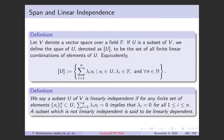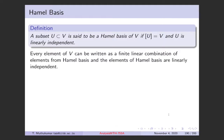These definitions are important to define the notion of a Hamel basis. A subset U of a vector space V is a Hamel basis if the span of U is V — that is, every element can be written as a finite linear combination of elements from U — and the set U is linearly independent.